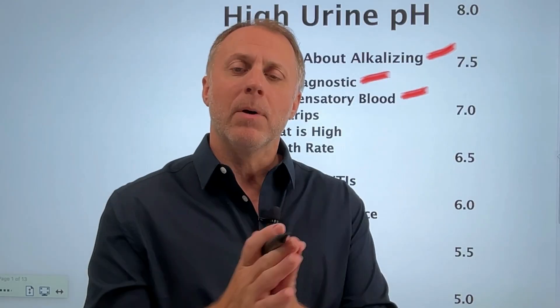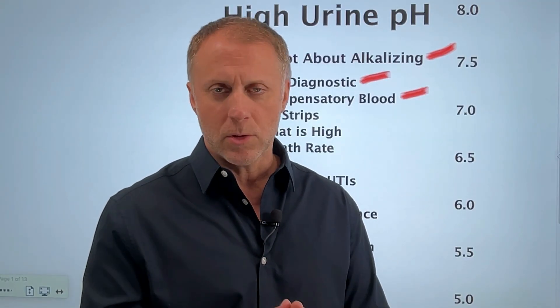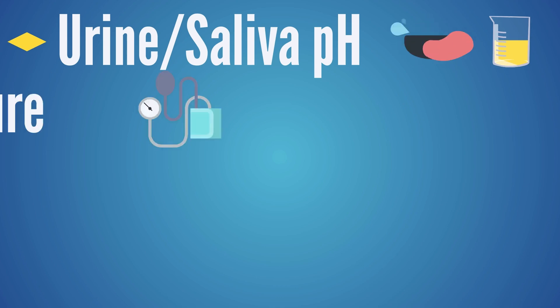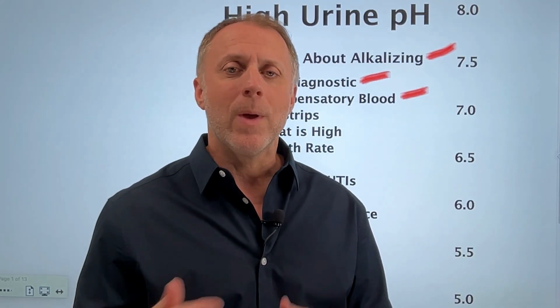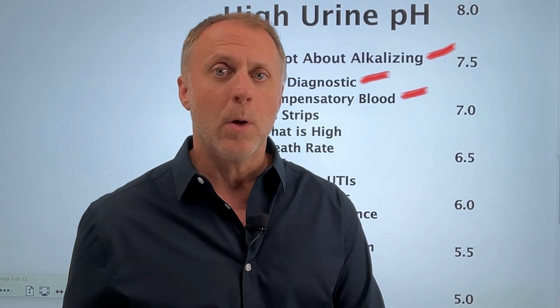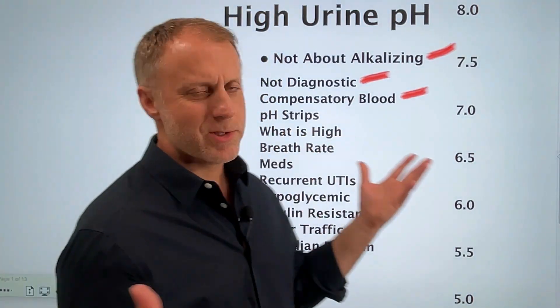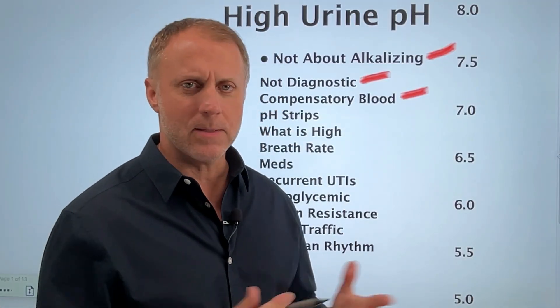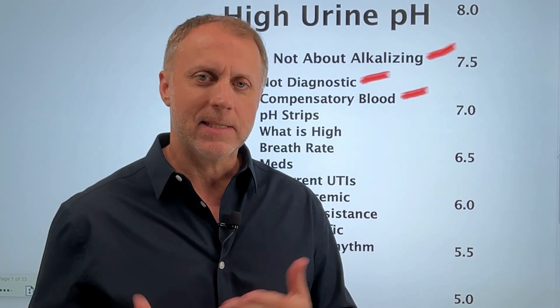If all we're doing is running blood tests, we may not see a lot of things going wrong until things are going very wrong. By the time you see blood way off, things have already gone awry. But if we look at other areas of the body, we can get insights ahead of time. We teach in all of our books and courses how to look at things like urine and saliva pH, blood pressure, blood glucose, and breathing rate. Looking at a lot of these markers together, we can start to get a picture of how the body is operating.